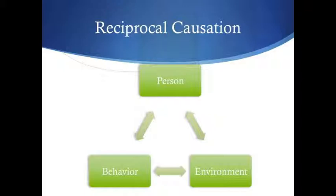A person's behavior will shape the environment — the environment is not a static thing. If we're thinking about teachers in a classroom, the behavior of students will influence what kind of teacher they are from year to year, from day to day, which will then influence the students in that classroom, which will in turn influence their behavior. So it goes around and around — these three all influence each other.